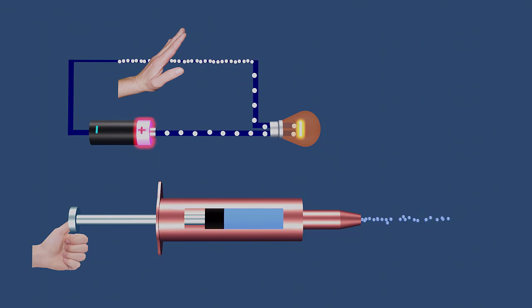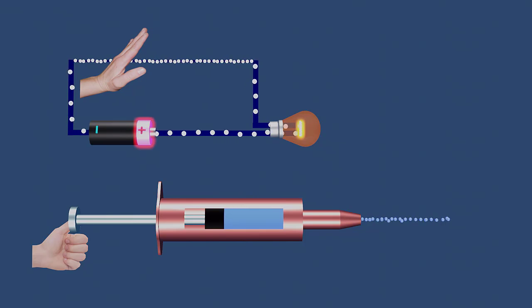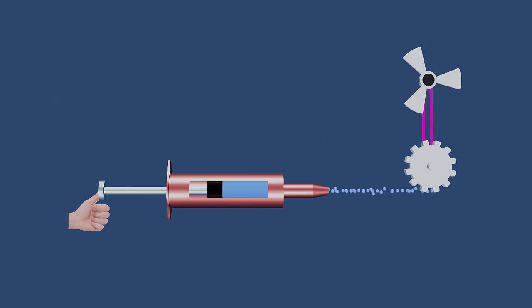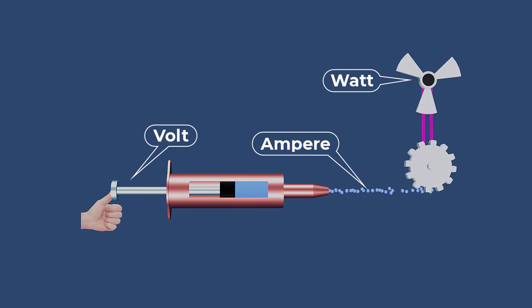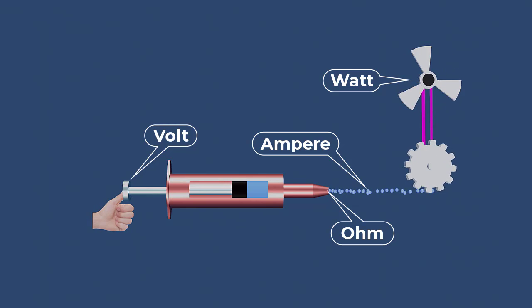Hello and welcome to the video on understanding the basic concepts of electricity, such as volt, ampere, watt, and ohm, using a simple syringe model.